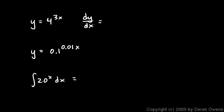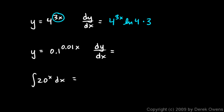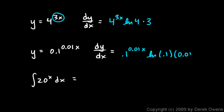For y equals 4^(3x), dy/dx is 4^(3x) times ln(4) times the derivative of the inner function, which is 3. For y equals 0.1^(0.01x), the derivative is 0.1^(0.01x) times ln(0.1) times 0.01. And the integral of 20^x dx is just 20^x over ln(20) plus c.